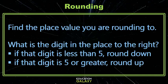What we want to do is find the place value we're rounding to. We check the digit to its right. Based on the value of that digit, we know if we should round up or round down.